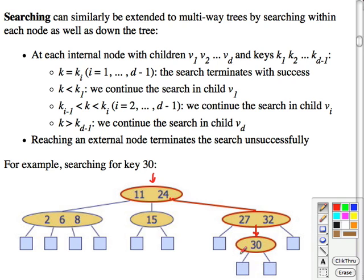If you are looking for 26, you'd say it's bigger than 24, it's smaller than 27, and then you go here and you know that it's not there because you've just hit a null leaf node.